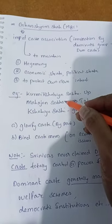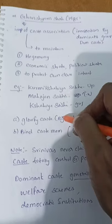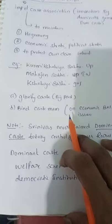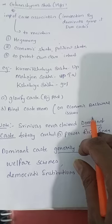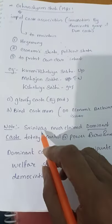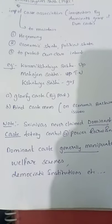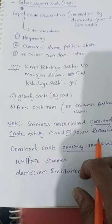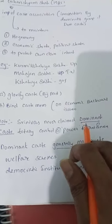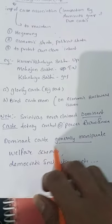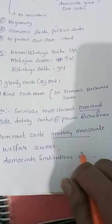These caste associations glorify their past and bind caste members around economic and social issues. Importantly, Srinivas never claimed that the dominant caste totally controlled the power of rural India — they generally dominate but not with total domination. Dominant castes generally manipulate welfare schemes and local institutions, but their control is limited.